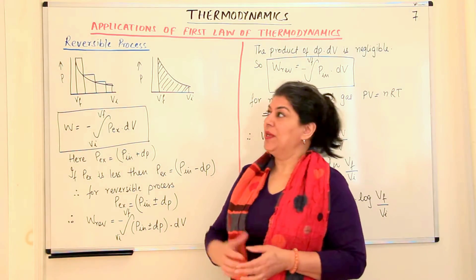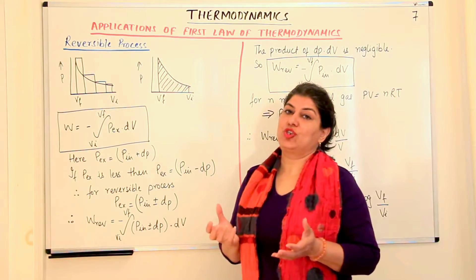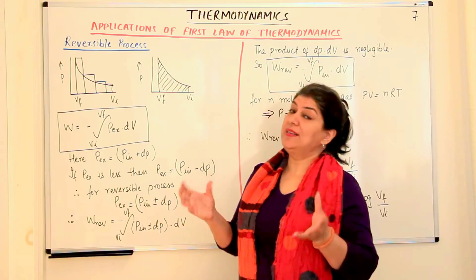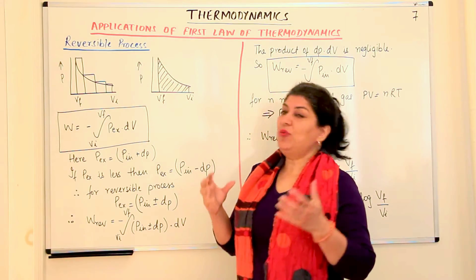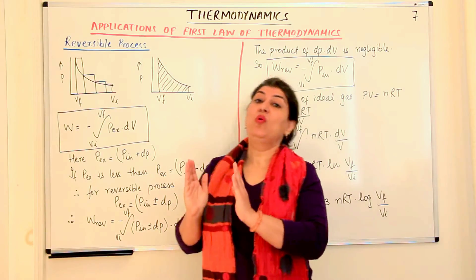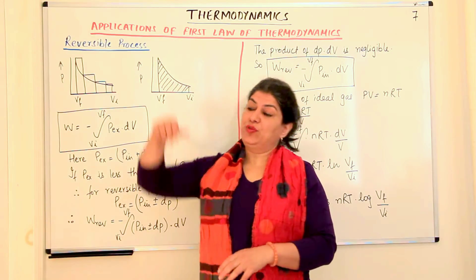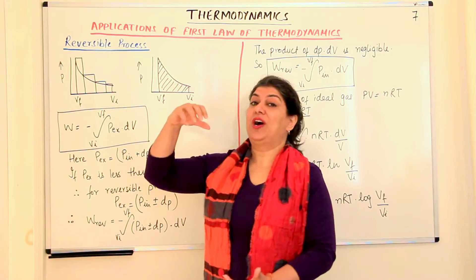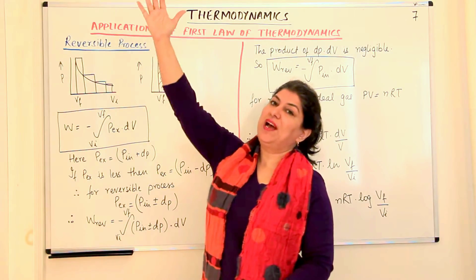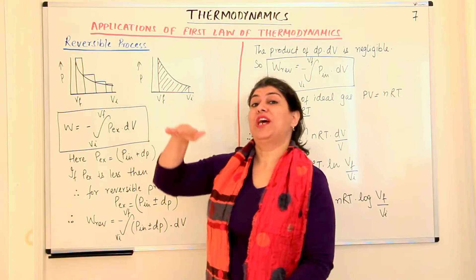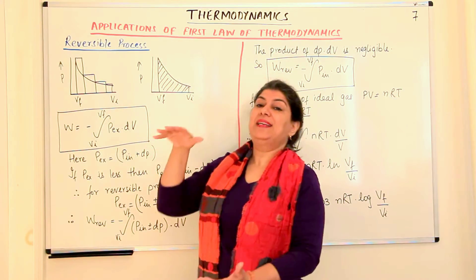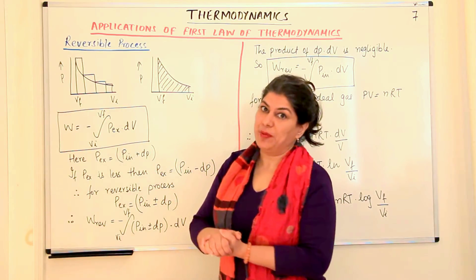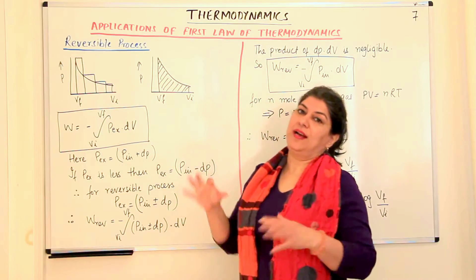We would like to study this further. We started discussing the applications of the first law in terms of work, and I explained that the expansion or contraction — that is pressure-volume work — is done by thermodynamic systems. We discussed a situation where we took one mole of an ideal gas in a cylindrical jar attached with a frictionless piston. Since the volume of the gas was more than 22.4 liters, we allowed atmospheric pressure to push down the piston in one step until the external pressure of one atmosphere became equal to the internal pressure of the gas, achieving equilibrium, and then we calculated the work done in this process.